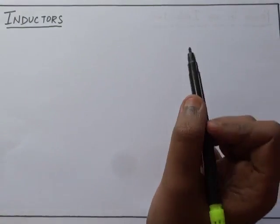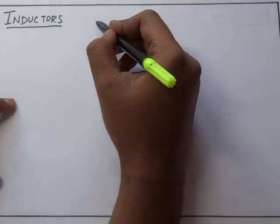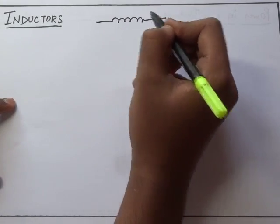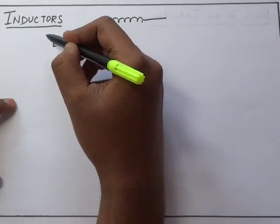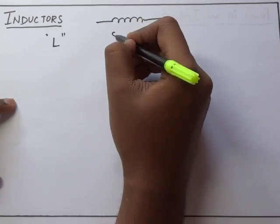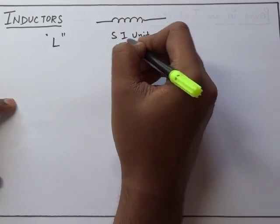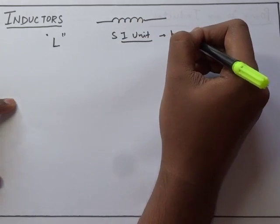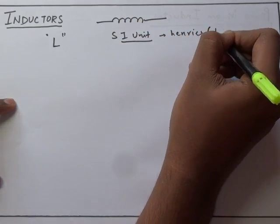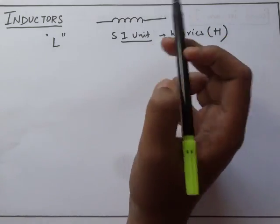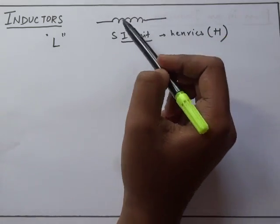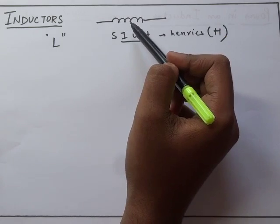Basically, an inductor is represented by this symbol, a series of coils, and it is denoted by the capital letter L. The SI unit for measurement of inductance is Henry's, capital H. So what exactly is an inductor?